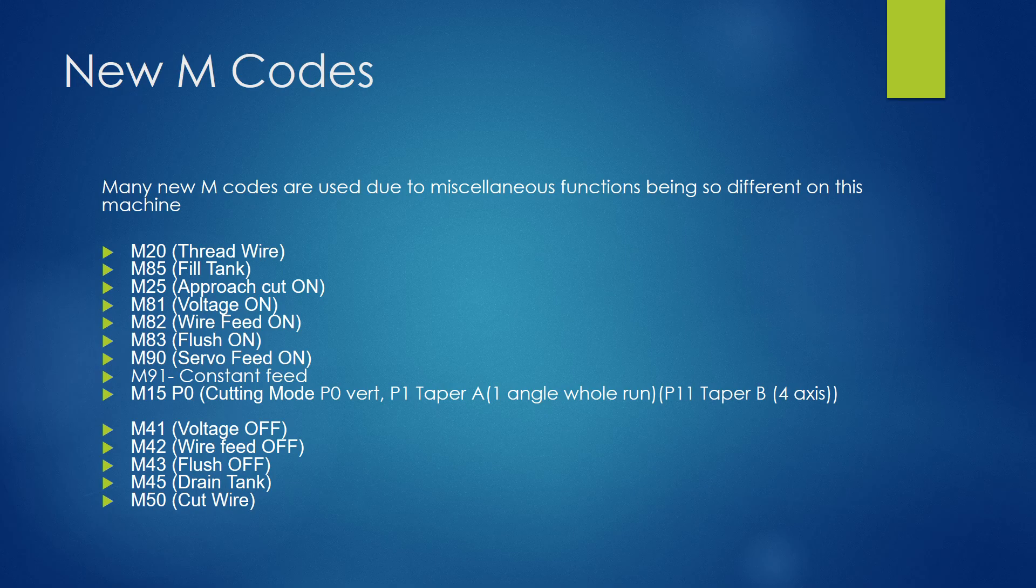New M codes. This is where it's a lot different, right? We're not turning on spindles. We're not turning on coolant. We're not doing any of that kind of stuff that we do on a vertical mill. We're actually doing completely different M codes.